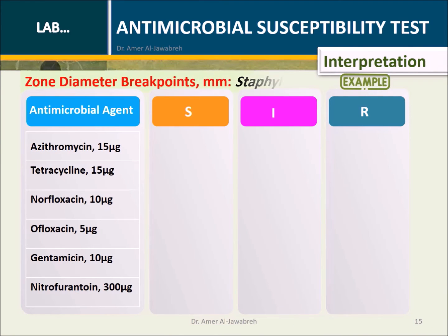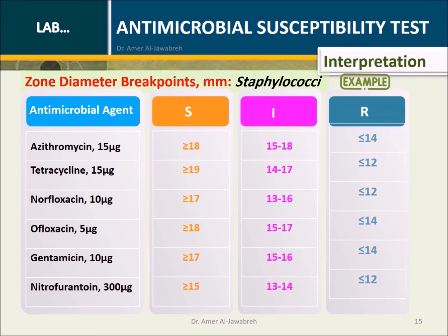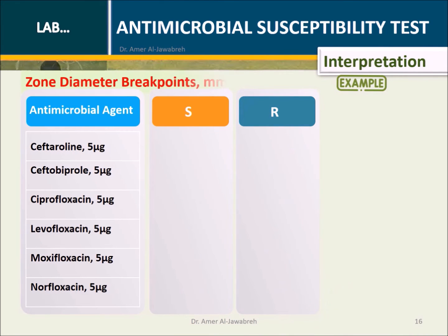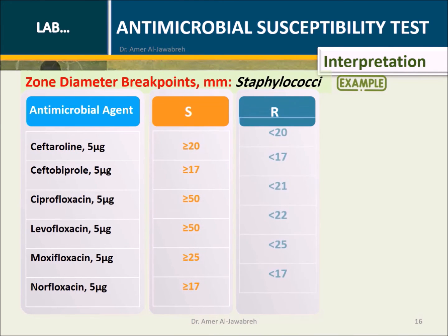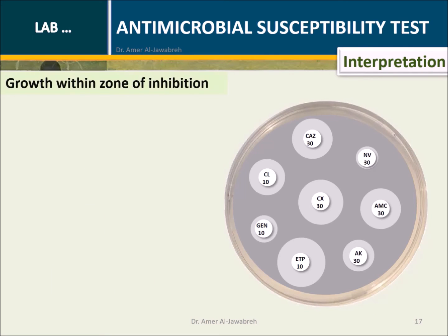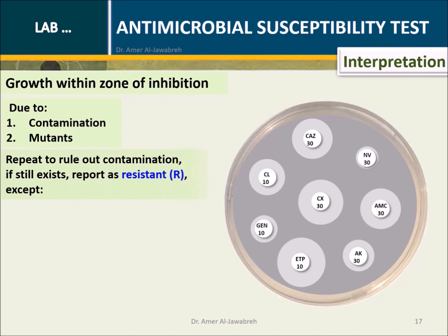Interpretation: Zone diameter breakpoints are expressed in millimeters. For example, for Staphylococcus, selected antibiotics from CLSI and EUCAST have specific zone diameter breakpoints used to classify isolates as susceptible or resistant.